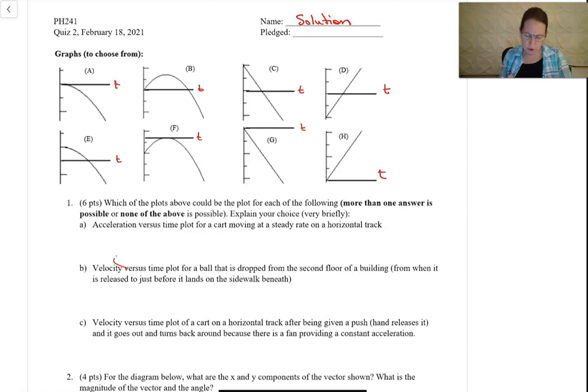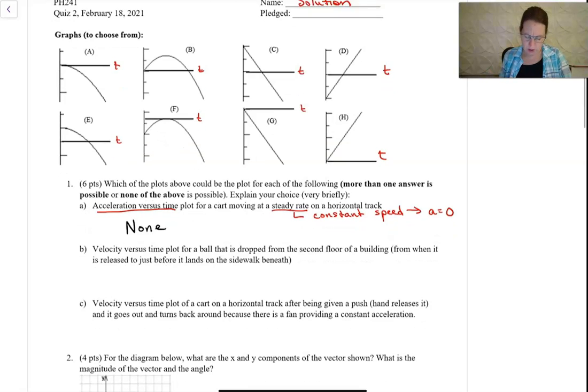The first one says acceleration versus time for a cart moving at a steady rate on a horizontal track. So steady rate means that we've got a constant speed. A constant speed means that the velocity isn't changing, and so that means an acceleration equal to zero. In that case, none of these show a plot of something that just has a value of zero.